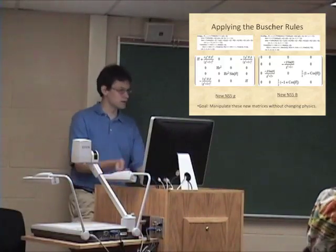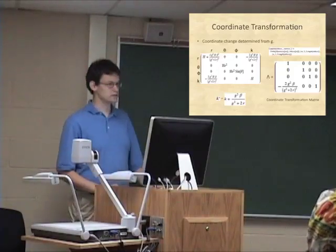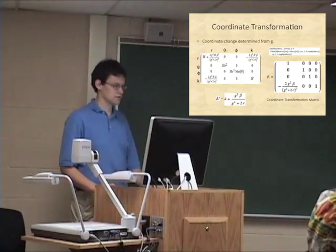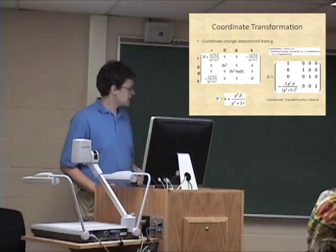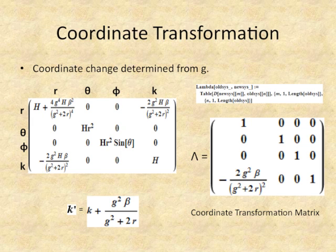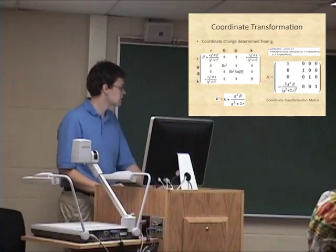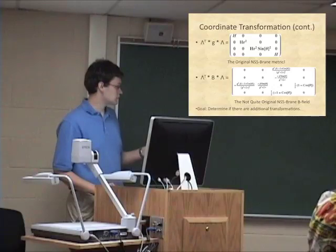My next question was: is there any way I can manipulate these new matrices without changing the fundamental physics? Indeed, I can do a coordinate transformation. I looked at the metric and noticed the interesting term occurs in the K row and the R row. I integrated that with respect to R and found that K-prime equals the original coordinate K plus this factor. I put that into my lambda coordinate transformation matrix, and going through the matrix multiplication gives back the original NS5 brane metric.